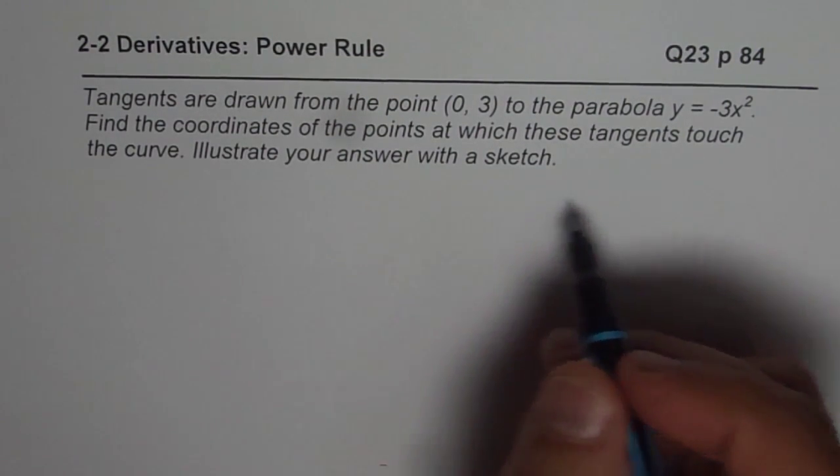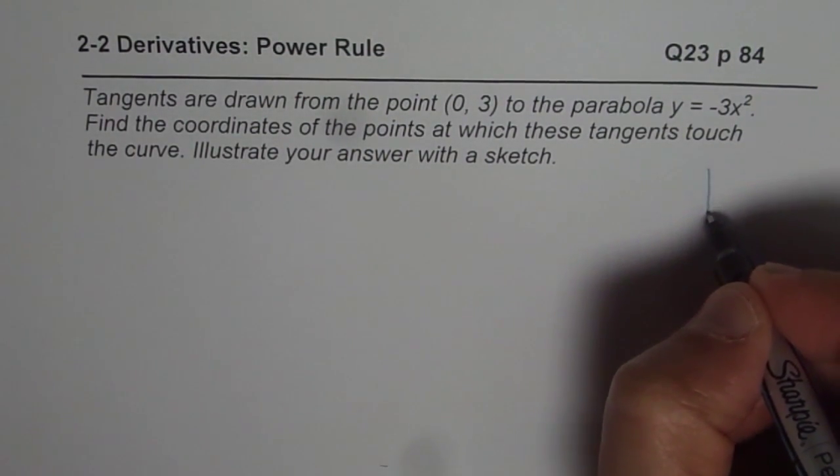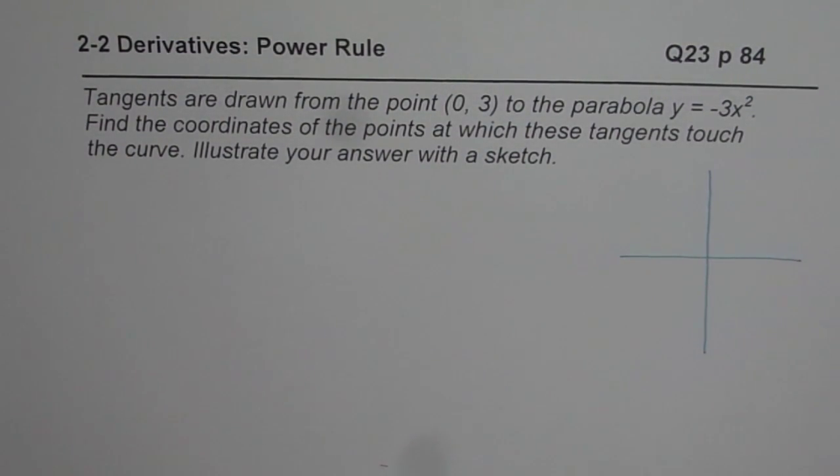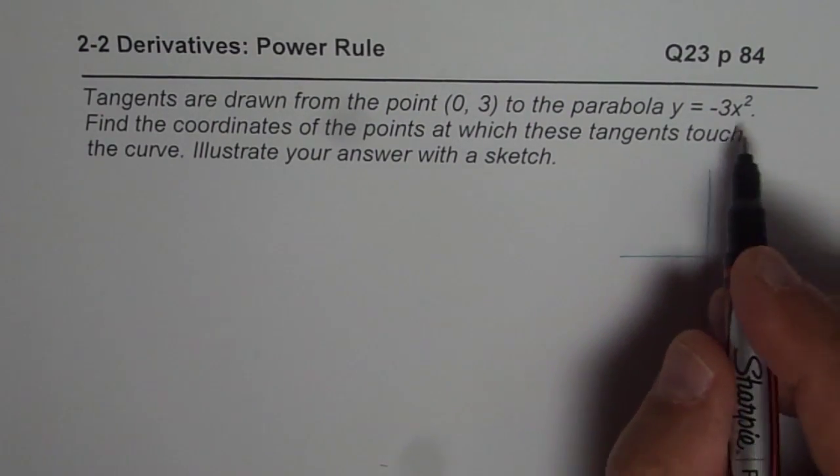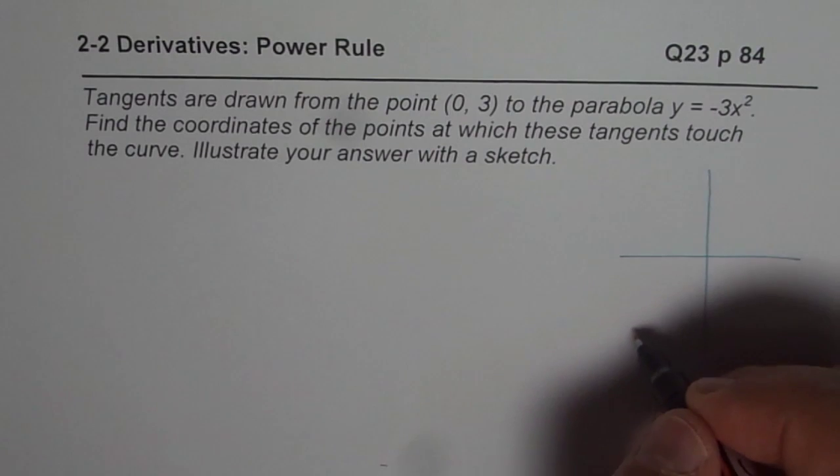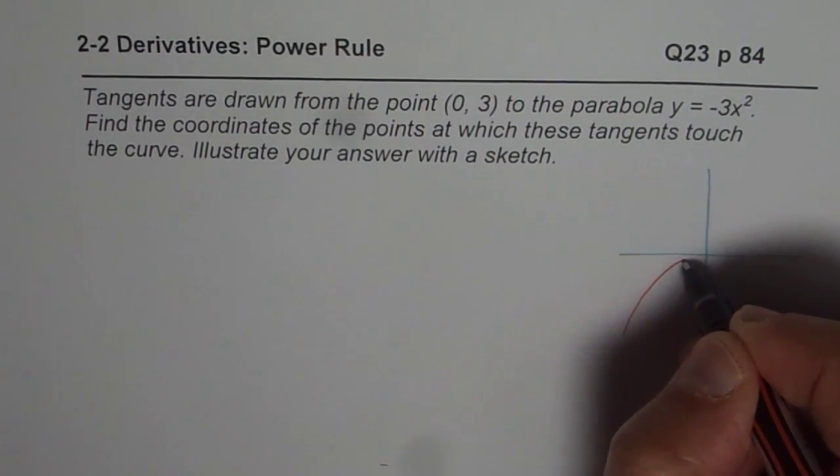So let us first try to make a sketch for the given situation. This is our coordinate axis. I'm making a very rough sketch here. -3x² means a parabola which opens downwards and passes through origin. So the parabola is like this for us.